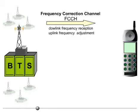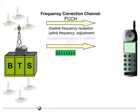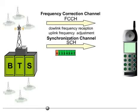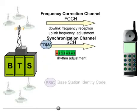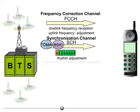The synchronization channel, SCH, then helps the mobile station to synchronize itself to time slot 0 sent out by the BTS. This means the mobile station must adjust to the rhythm given by the BTS. The SCH contains the TDMA frame number as well as the base station identity code, containing basic information about the network operator that can be compared with the info stored on the SIM card.